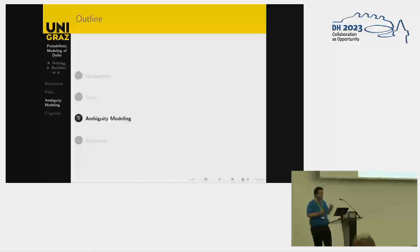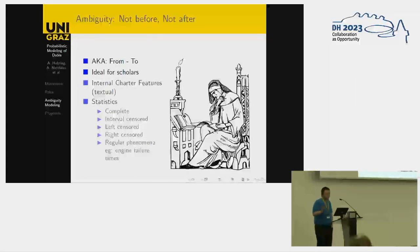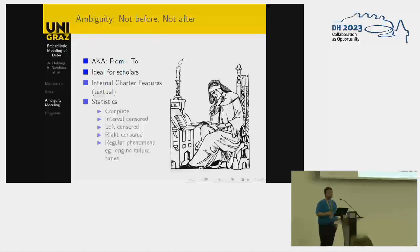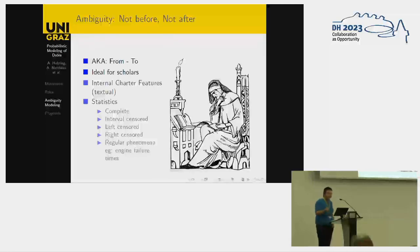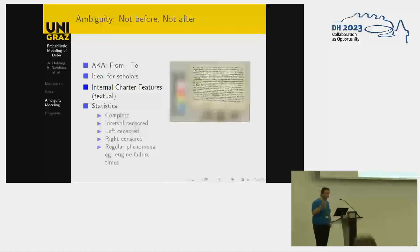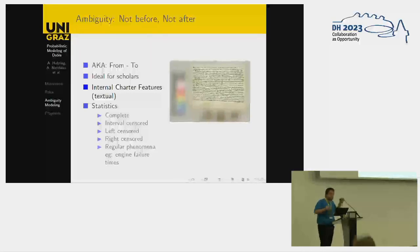Let's see how we can model ambiguity in the case where humans can talk. The standard way — already used extensively before any machine learning was out there — is the 'not before, not after', also known as 'from–to'. It's ideal for scholars: they're familiar with it, they can understand it, they can reason about it. In our context, it makes a lot of sense when you care about the internal charter features, which would be the textual features — whatever is in the text gives you specific hints so that you can put bounds on your knowledge.